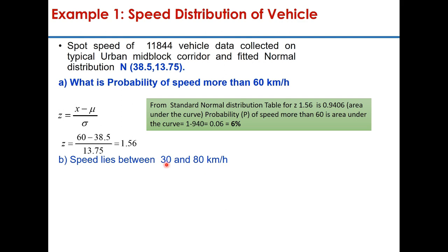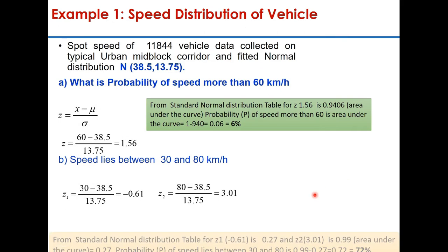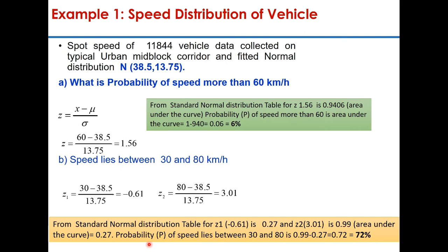The second part of the question is: what is the probability that speed lies between 30 and 80 km/h? You calculate Z₁ = (30 − 38.5) / 13.75 = −0.62 and Z₂ = (80 − 38.5) / 13.75 = 3.01. From the standard table, for Z₁ = −0.62 you get 0.2709, and for Z₂ = 3.01 you get 0.9987. The area between these two values is 0.9987 − 0.2709 = 0.7278, so the probability that speed lies between 30 and 80 km/h is approximately 72%.